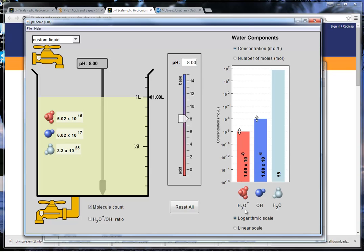Notice that there's times 10 to the minus 8 H plus and 10 to the 6 OH minus. Remember that pH 8 means base, so there's going to be more OH. And remember that these numbers are adding up to 14, the 8 and the 6.